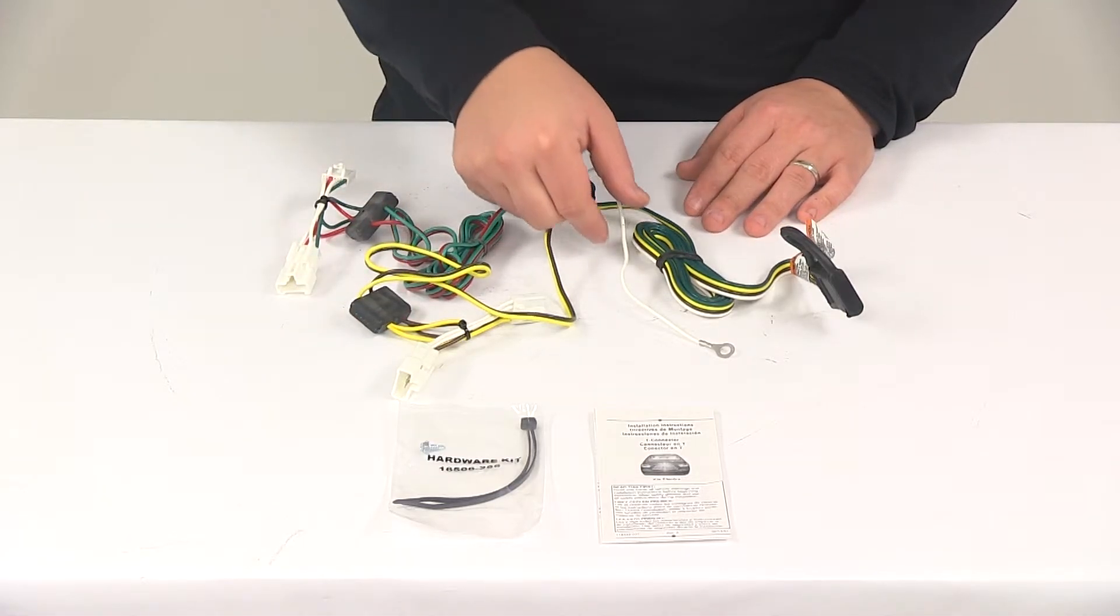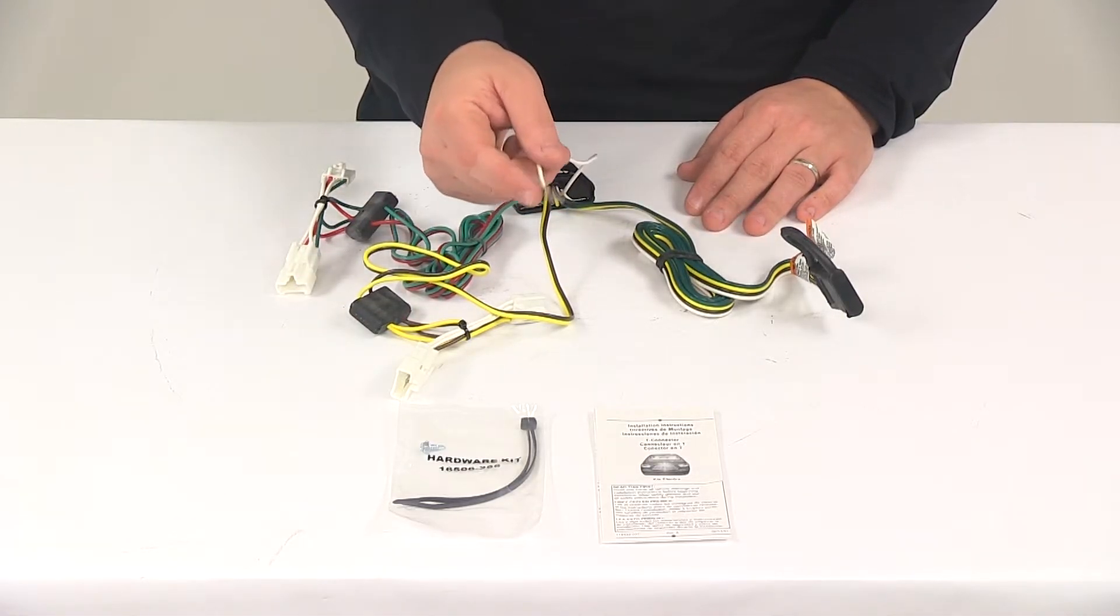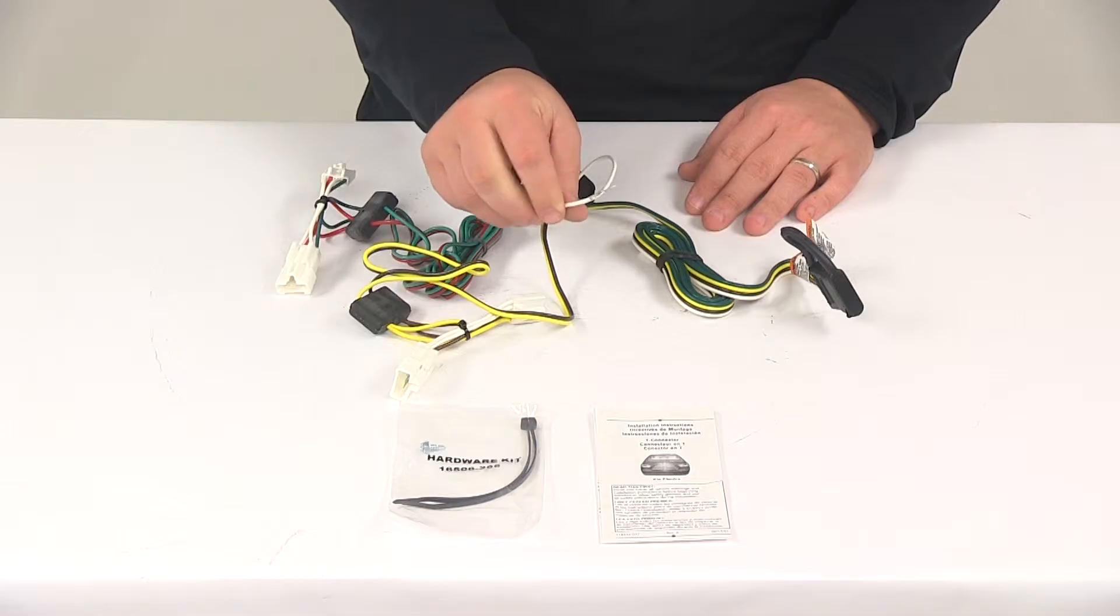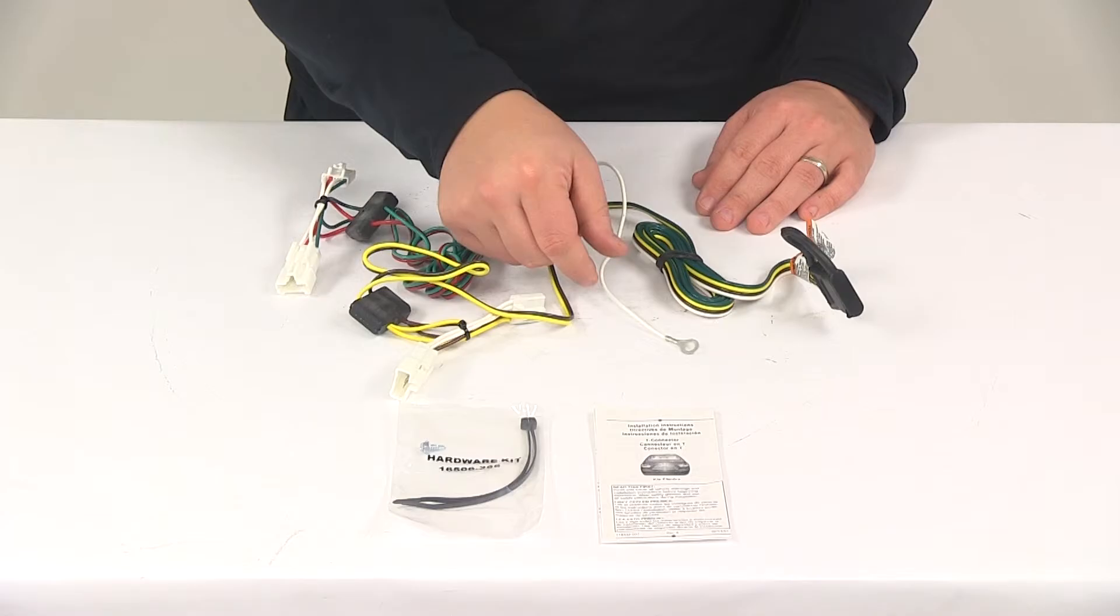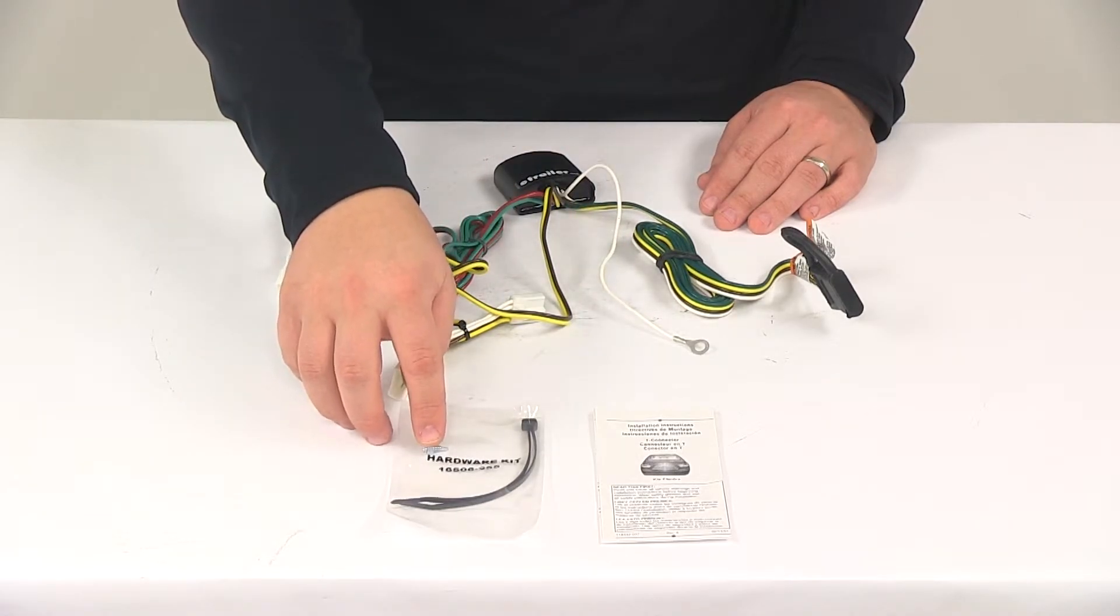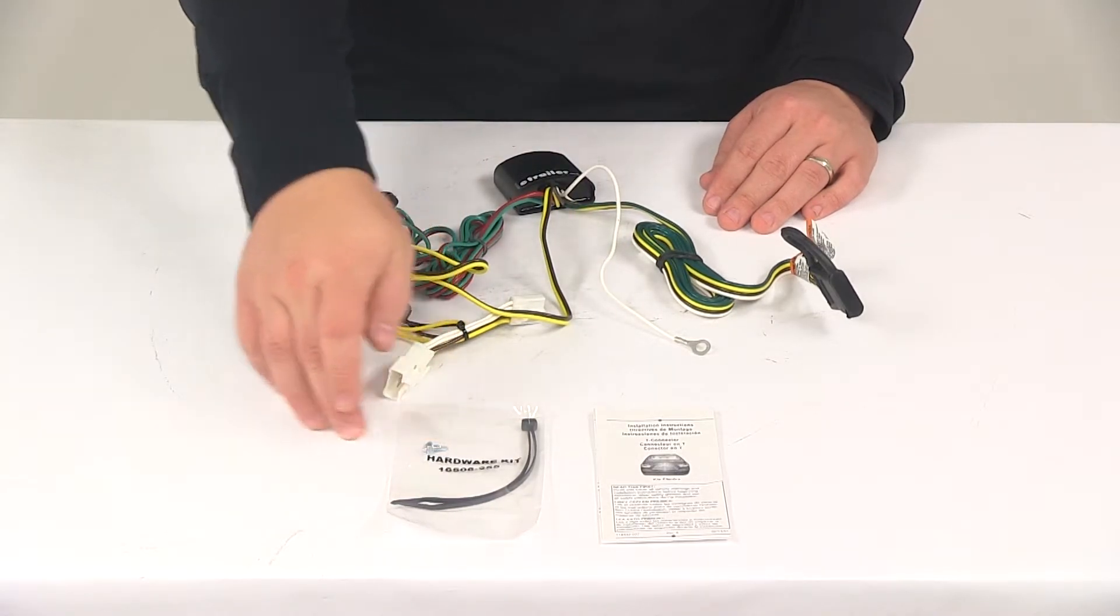Then you'll need to make a ground connection. Your ground wire is the white wire with the ring terminal already attached to it. You want to ground it to a nice clean metal surface. You can use an existing grounding stud or the kit comes with a grounding screw that you could use as well.